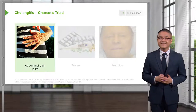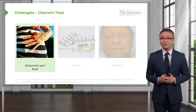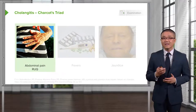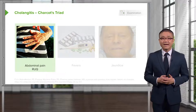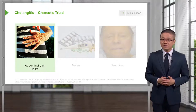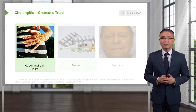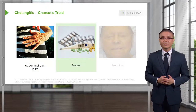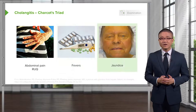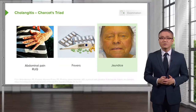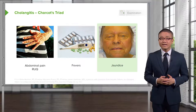Cholangitis is classically described in terms of physical findings as Charcot's triad. This includes right upper quadrant abdominal pain, fevers, and jaundice. Right upper quadrant pain, fevers, and jaundice makes up Charcot's triad.